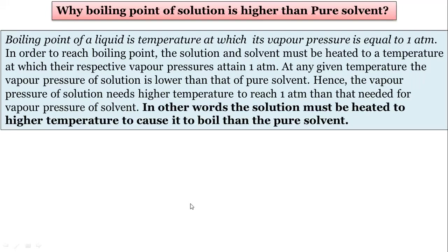Such type of questions will be asked in the examination: why is the boiling point of a solution higher than the pure solvent? The main reason is vapor pressure — the vapor pressure of a solution containing non-volatile solute is less. So to reach atmospheric pressure, we have to heat more. In other words, the solution must be heated to a higher temperature to cause it to boil than the pure solvent, because the vapor pressure of the solution is less.